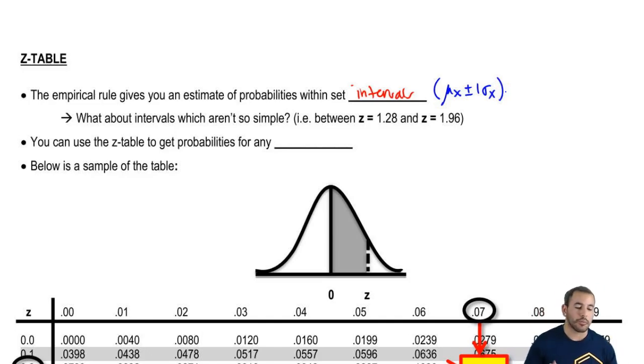Now, what if there's intervals that aren't so simple? For example, between 1.28 and 1.96. Our empirical rule only tells us for one, two, and three, not anything in between. So we have to use the z-table to get probabilities for any one of those intervals.